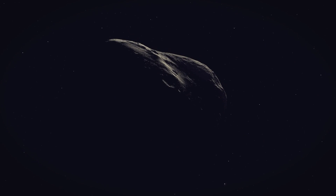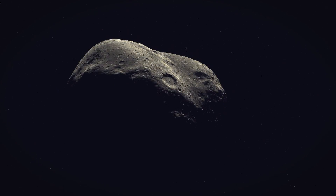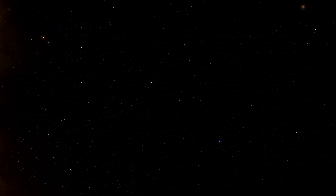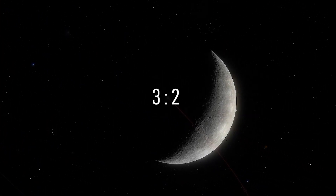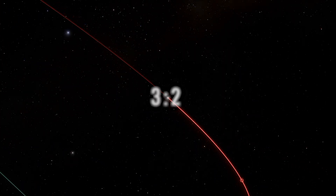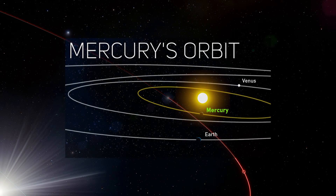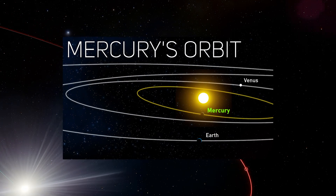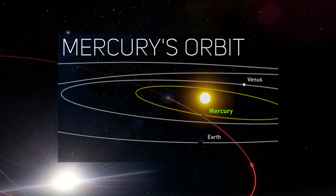A spin-orbit resonance doesn't need to be a tidal lock necessarily, where the synchronization is one to one. On Mercury, for example, there's an SOR of 3 to 2. I go into a lot more detail about this in my video on Mercury's weird orbit, which you should definitely check out.